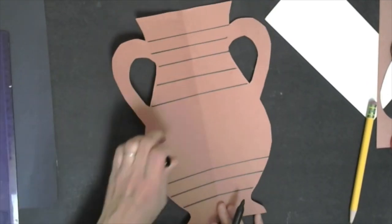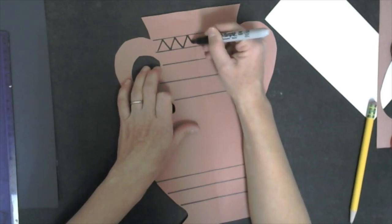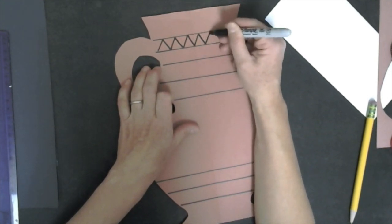Now you want to decide if you're going to be using the black figure technique where the positive space is in black or red figure painting where the positive space would be in brown.